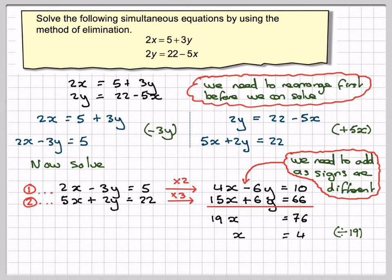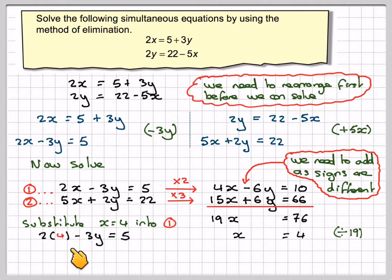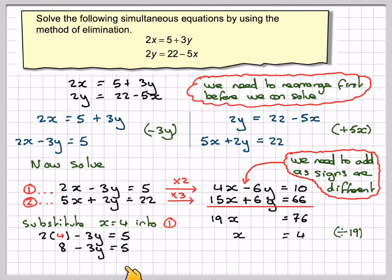That's looking quite good. We do the same as before — we substitute back either into equation 1 or 2. Substituting into equation 1, we get 2 times 4 minus 3y is equal to 5, with x now being 4. That gives 8 minus 3y is equal to 5. Taking away 8 from both sides gives minus 3y is equal to minus 3. Dividing by minus 3, we get y is equal to 1.